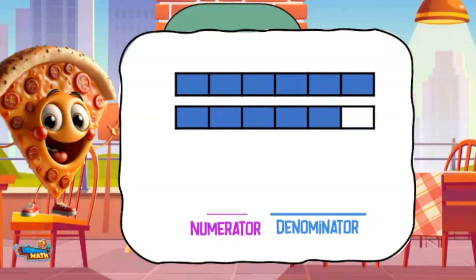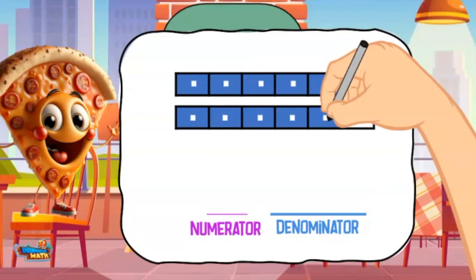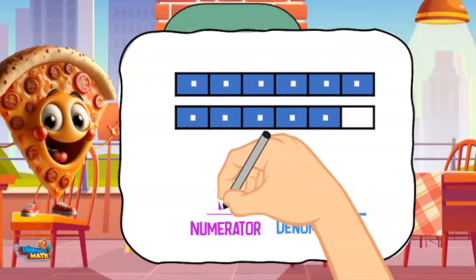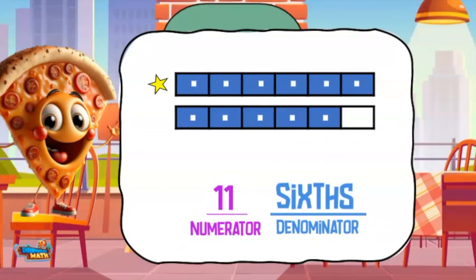Sometimes fractions represent more than one. In this example we see one whole and another part of a whole. I start with the numerator — the number of blue parts — there are 11, so I write the number 11. Now to find the denominator, go back to the whole and count how many pieces it takes to make the whole. It takes six parts, and six parts are called sixths. This fraction is 11 sixths.